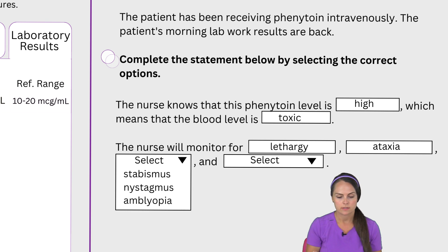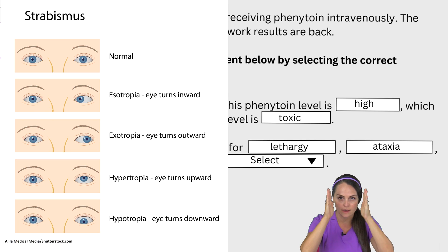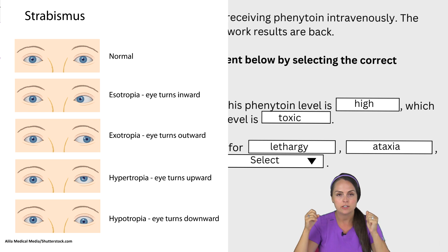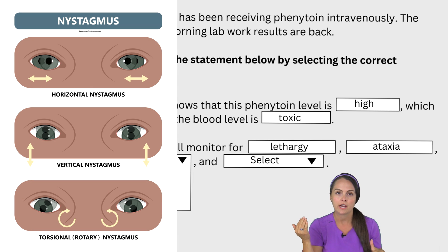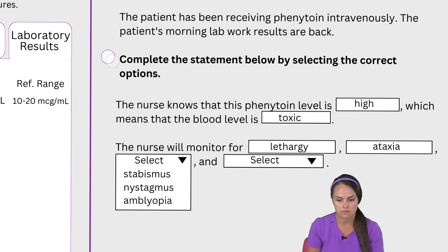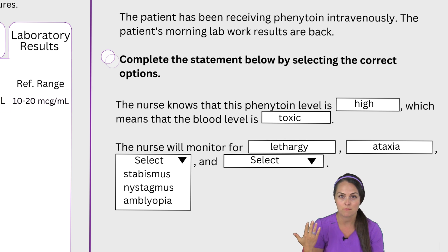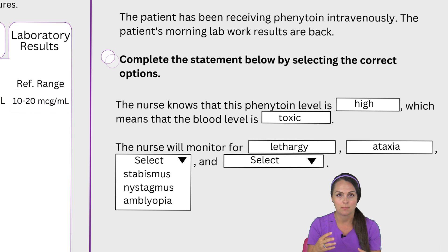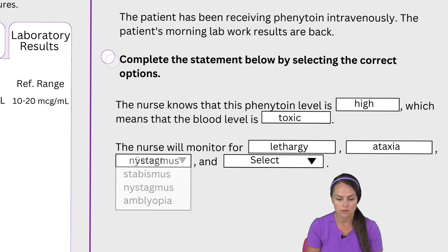Therefore it's ataxia. Then we have our third drop-down box. Strabismus is an eye condition where your eyes are misaligned and not looking straight — one can be turned upward or downward. Nystagmus is where you have rhythmic involuntary movement of the eyes. Amblyopia is another term for lazy eye, where an eye drifts off. With phenytoin toxicity, nystagmus jumps out because areas of the brain that control eye movements are misfiring due to this medication becoming toxic, causing just this involuntary movement of the eyes. The other eye disorders don't fit how phenytoin causes misfiring of neurons. So we're going to put nystagmus.